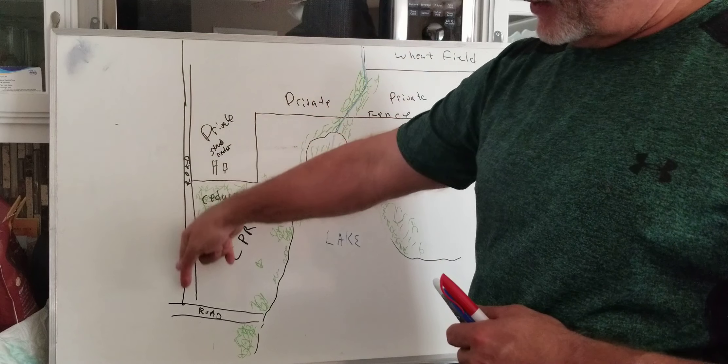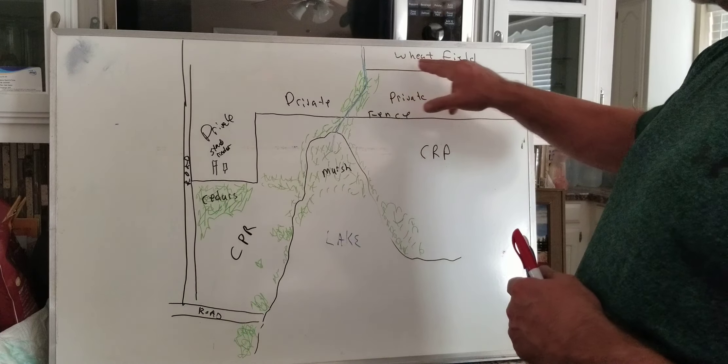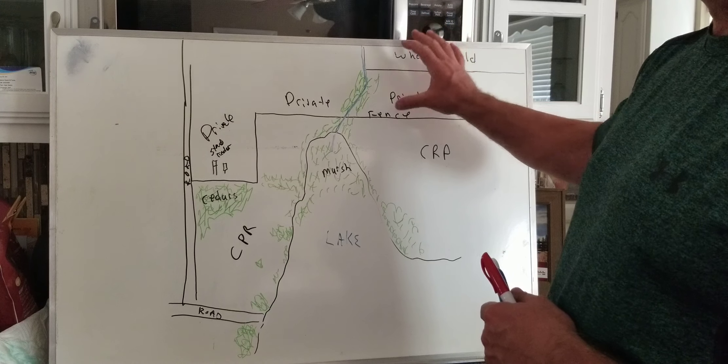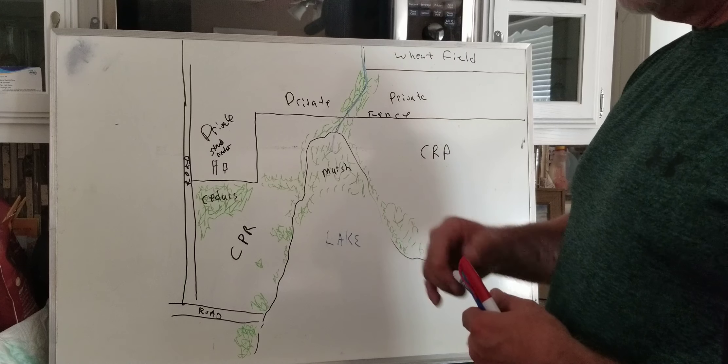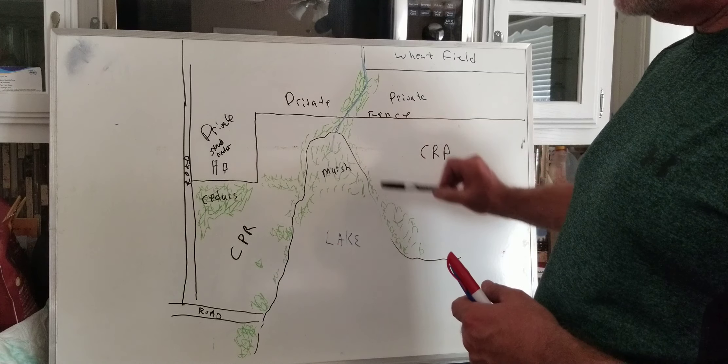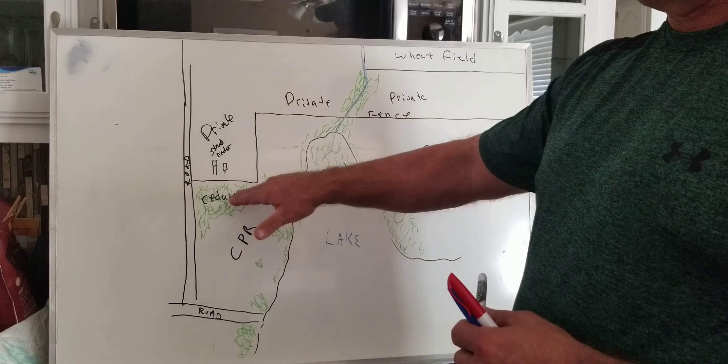The access road is over here to the west. There's a huge wheat field up to the northeast where in November the deer are feeding, especially most of the does. Historically, the bucks used to bed in these groups of cedars here as well as all along the lake edge.